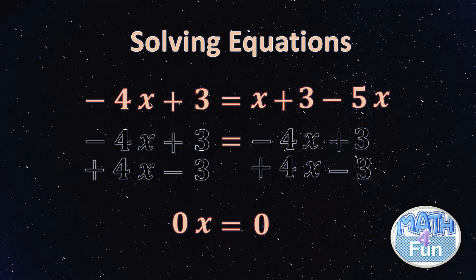If we consider that we have 0x equals 0, what would happen? What number can you replace x with and multiply by 0 to get 0? If we put 1, 1 times 0 is 0, it's correct. If we put 2, 2 times 0 is 0, which is correct. If you put 3, 3 times 0 is 0, it's correct.